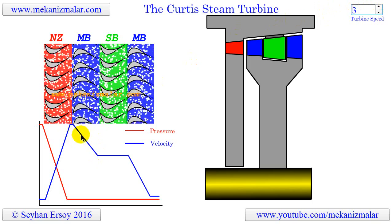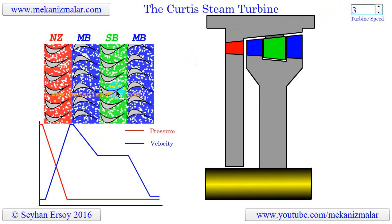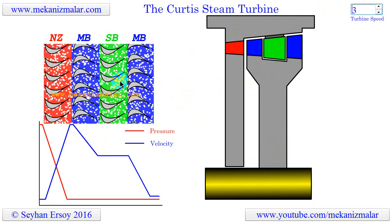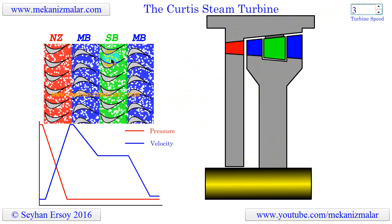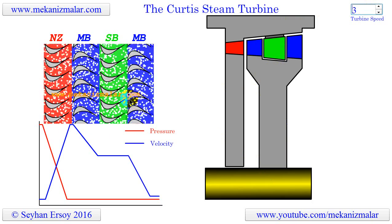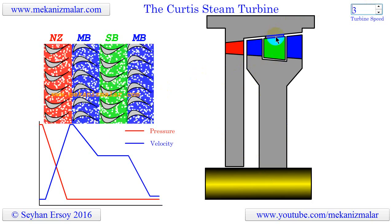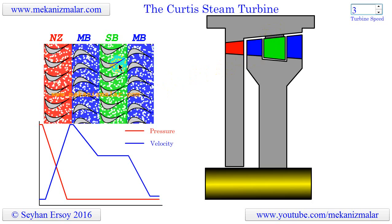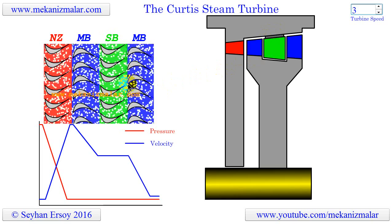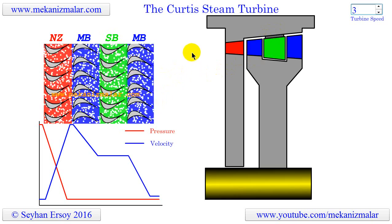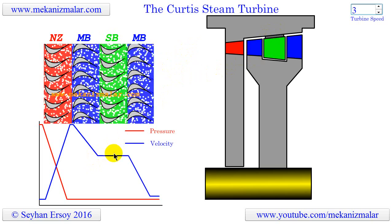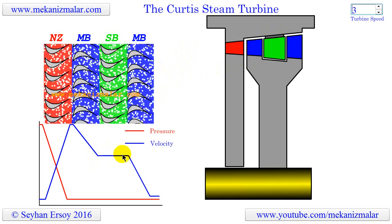The blades in the moving blade stage are attached to the rotor of the turbine. The green flow in the next stage corresponds to a stage where the steam velocity changes direction. Here, the blades are stationary and attached to the turbine body, indicated by SB in the animation. The purpose of this stage is to direct the steam to the next moving blades at the correct angle. If we ignore friction, the speed of the steam in this stage does not change, as seen in the plot.